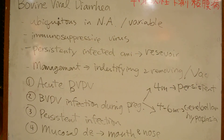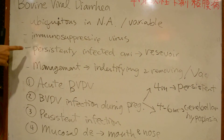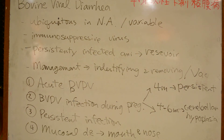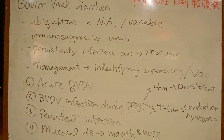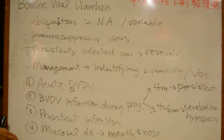牛ウイルス性下痢・粘膜病は様々な病気を起こし、免疫低下を起こします。呼吸器症候群に関係していて、3つのカテゴリー（急性感染症、妊娠中の感染、持続感染）に分けられます。最後に覚えておかなきゃいけないのが粘膜病という最もひどいパターンの病気で、発熱、重度の下痢、リンパ球減少などが見られ、口の周りに潰瘍が見られます。そのため、口蹄疫・水泡性口内炎に似ているので、鑑別診断として牛ウイルス性下痢・粘膜病を覚えておくことが重要です。